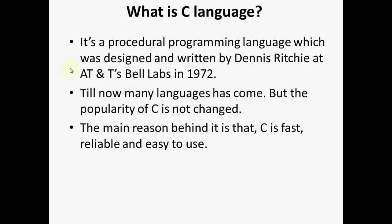What is C Language? C is a procedural programming language or a structural language which was designed and written by Dennis Ritchie at AT&T's Bell Labs in 1972. Till now many languages have been developed but the popularity of C has not changed. The main reason behind this is C is very fast, reliable and very easy to use.